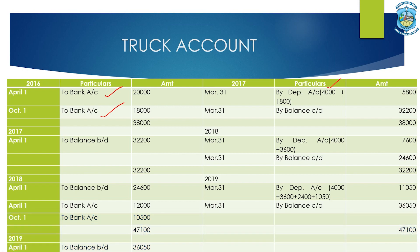Truck 2 was purchased on 1st October 2016 for Rs. 18,000, used for 6 months only. Depreciation = 18,000 × 20% × 6/12 = Rs. 1,800. Total depreciation for 2016-17: 4,000 + 1,800 = Rs. 5,800, shown on the credit side of the asset account. The total debit is Rs. 38,000. The closing balance carried down on 31st March 2017 is Rs. 32,200, which becomes the opening balance for the next year.